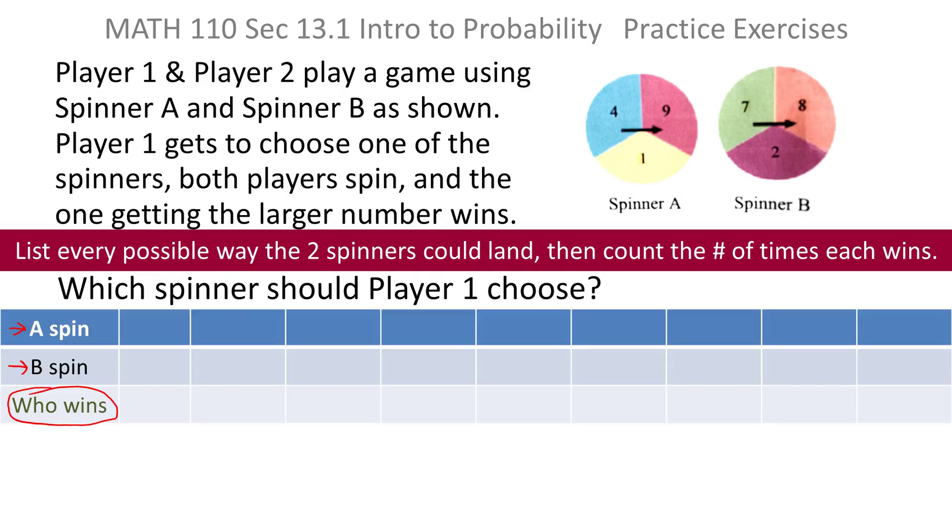For instance, I might make a little chart where I've got a row for the spin that spinner A goes through, a row for spinner B, and then I have a row for who wins that match. Then I list every possible combination. So, for instance, what if I said spinner A came out 1 and spinner B came out 2? That's one possibility. The larger number wins, so that tells me immediately that B wins.